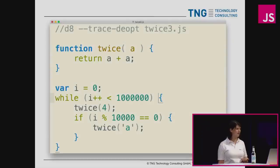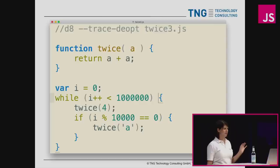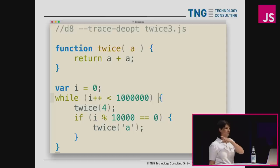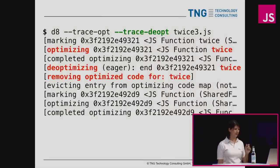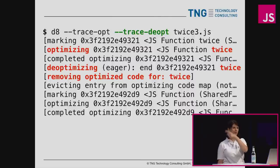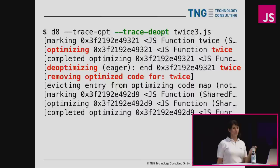There's another neat example: if we run 'twice' always on an integer for 10,000 loop iterations and then just once call it on a string, the compiler optimizes it for integers — but that single string call forces it to throw out the optimized version entirely, because it can no longer use the machine code it generated.